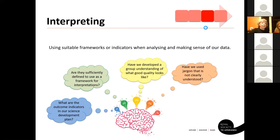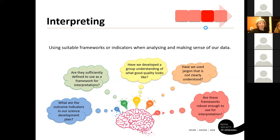We recommend doing interpretation with more than one person. Use your senior management team to support you. If you're doing an impact report, go back through those outcome indicators and look at what you thought success looks like. If it doesn't seem useful, it's not too late to pause, unpack them further, and do more thinking before you actually do your interpretation.